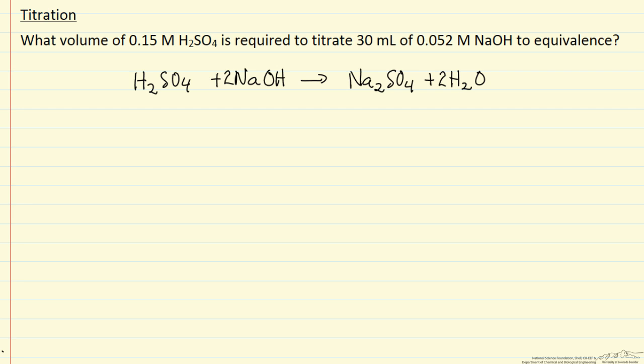And now let's write down the information that we know. Sulfuric acid is 0.15 molar. The sodium hydroxide is 0.052 molar, and we have 30 milliliters of sodium hydroxide. We don't know, this is what we're trying to solve for, the volume of the sulfuric acid.